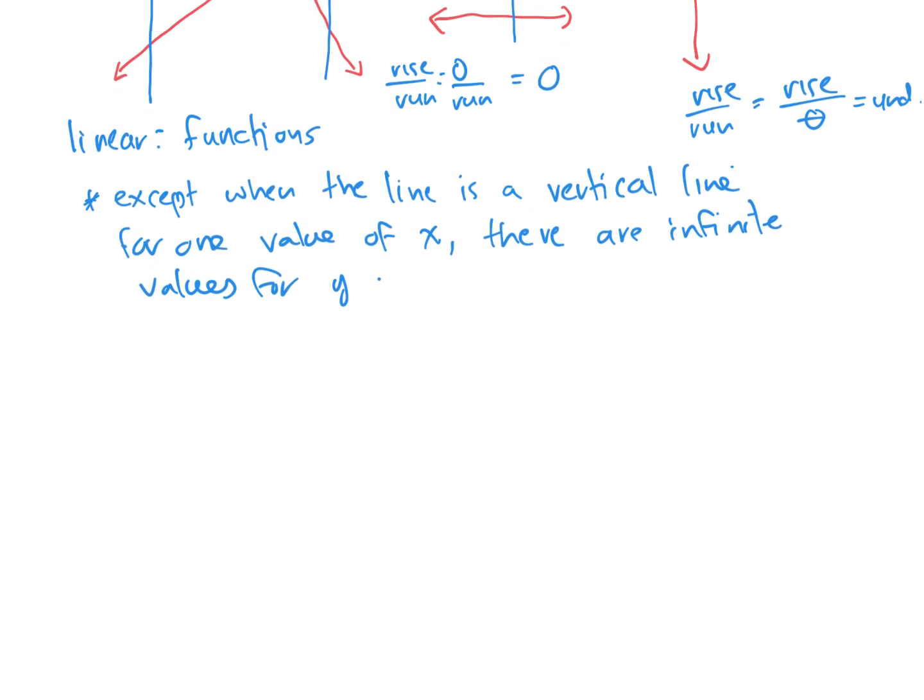So we'll just put except when the line is a vertical line. Because for one value of X, there are infinite values for Y. Because every Y is the same. So there are infinite values for Y. So that's the only exception with linear functions. Quadratic functions. We could have a concave up quadratic or a concave down. So this would be X squared. This would be negative X squared because it's concave down. So this is what you learned in grade 10. Quadratics will always pass the vertical line test. So quadratics are always functions.